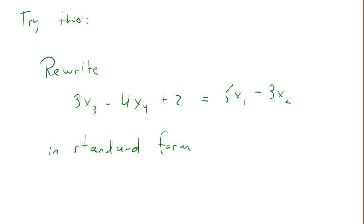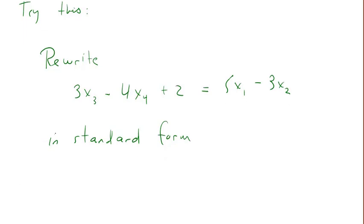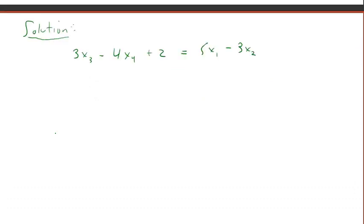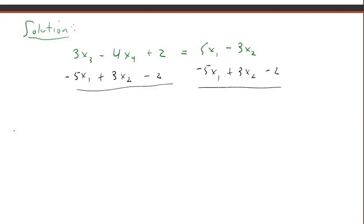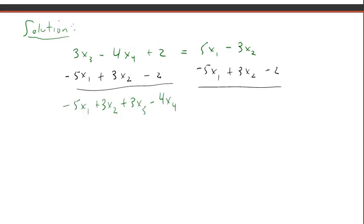Try the following on your own: rewrite this equation in standard form. Go ahead and put the video on pause, and when you resume we'll check your answer. Here's the solution. We're just going to add and subtract terms from both sides, get all the variable terms on the left and the constant on the right, and we have standard form.